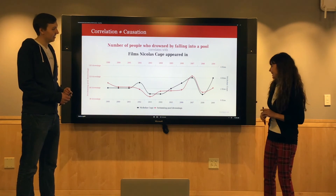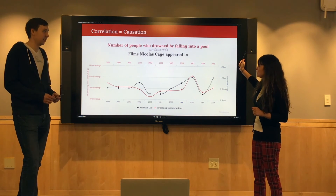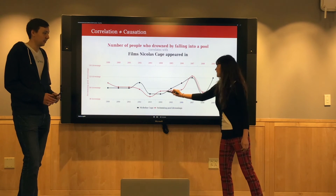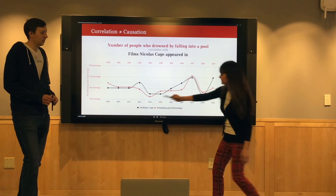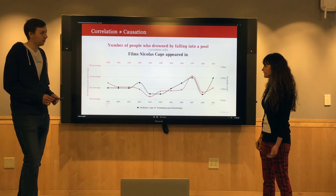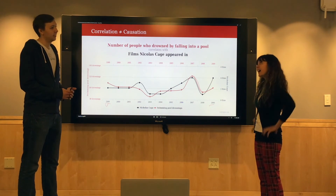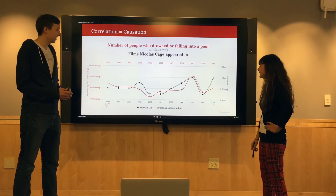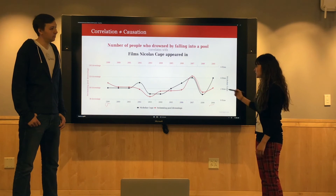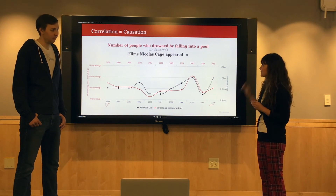Here's a funny example — actual data showing number of people who drowned by falling into a pool correlated with films Nicolas Cage appeared in, from 1999 to 2009. They look really similar. Do we think there's a relationship? Probably not. But because of other factors or just the randomness of the world, you can end up with strings of data that look very similar, and we don't want to assume that one causes the other — otherwise you end up with some really goofy conclusions like this.